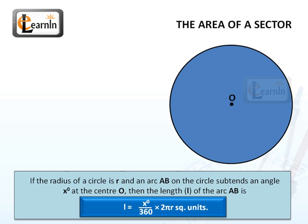If the radius of a circle is R and an arc AB on the circle subtends an angle x degrees at the center O, then the length L of the arc AB is given by: L = (x / 360) × 2πR square units.